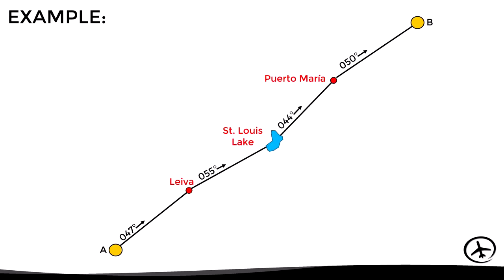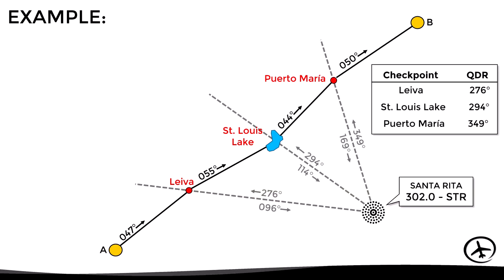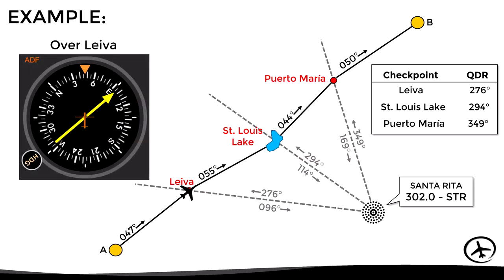Let's see more in detail how to use this technique in practice. Let's say we plan a VFR route and there is an NDB nearby. During flight planning, we determine the approximate QDR for each checkpoint, and then during flight, using dead reckoning in conjunction with the ADF, the pilot can double-check and monitor its approximate position. For example, when the ADF shows a QDR of 276, the pilot knows that the aircraft must be flying over Leva, or at least very close to it.